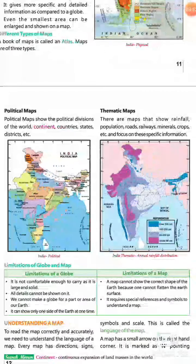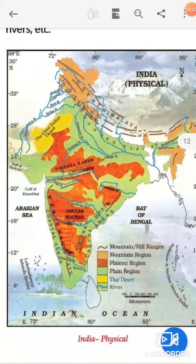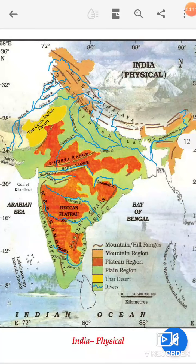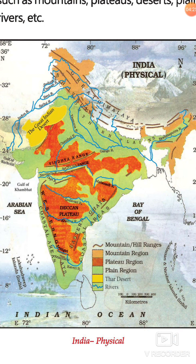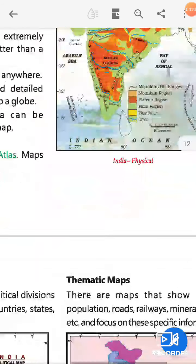First is a political map. This is a political map of India. You can see it is shown in different colors — for example, the Great Indian Desert area of Rajasthan is shown in a different color. Political map shows the political divisions of the world — continents, countries, states, and districts.